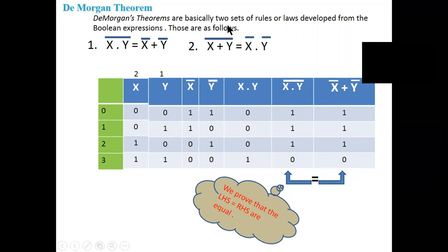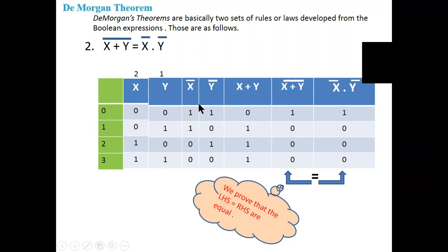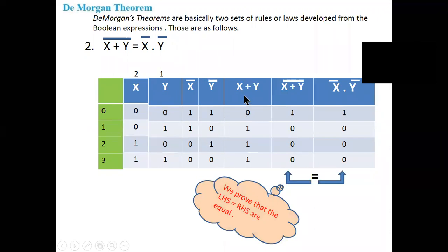Come to the next De Morgan's law: x plus y whole bar equal to x bar dot y bar. Two variables x and y: 0,0 — 0,1 — 1,0 — 1,1. x bar is complement of x: 1,1,0,0. y bar is complement of y: 1,0,1,0.